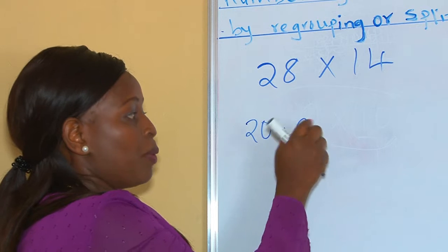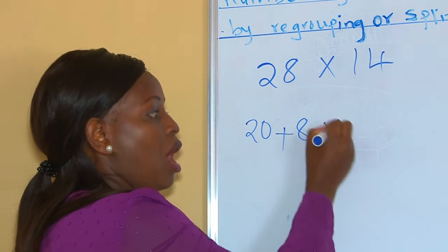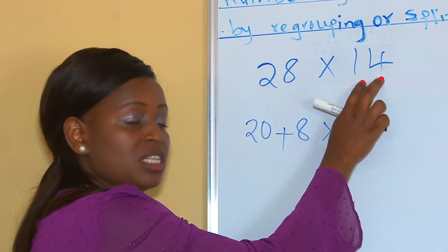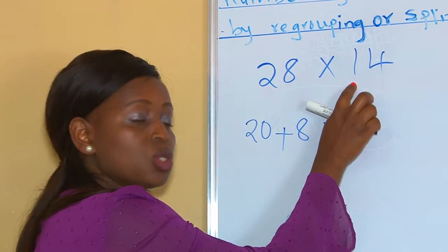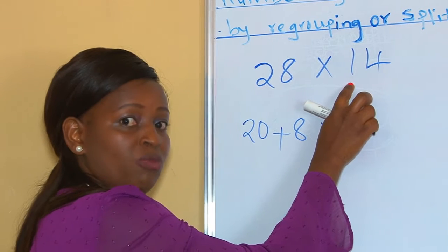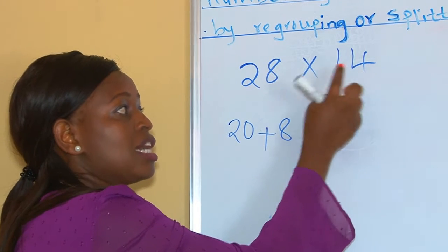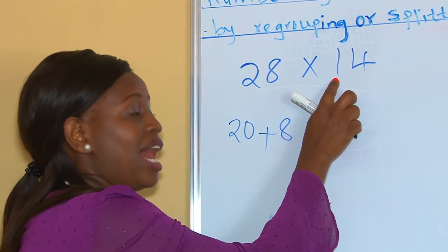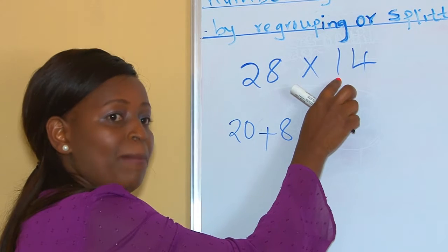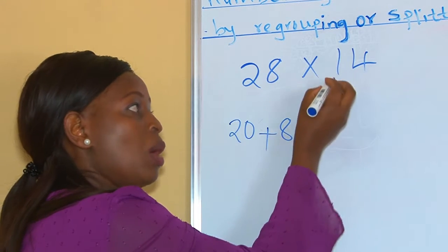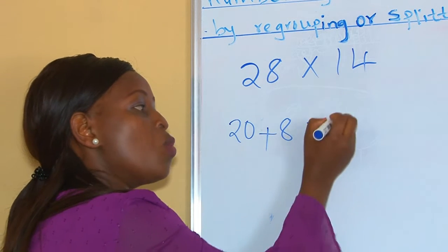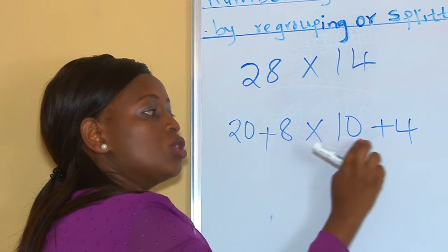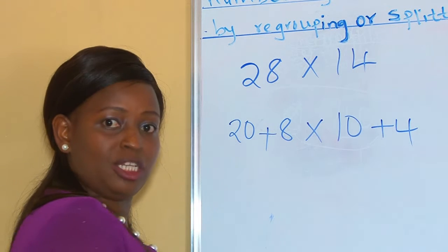Now let's regroup our second number, which also has two digits — that is digit 4 and 1. So in terms of place value, this 4 is 1s and this 1 is 10s. How many 10s are in this number? It is only 1. And that is why when we are regrouping, we have 10 plus 4, so 10 plus 4 becomes 14.